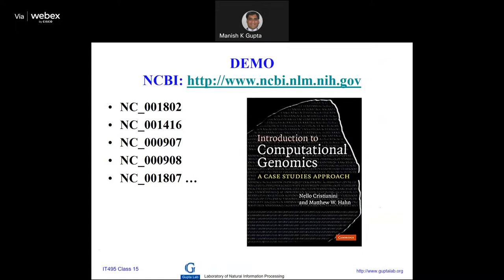There is a nice book if you want to understand computational genomics. I will show you a demo at the NCBI website — the NIH National Institute of Health. These numbers are accession numbers, just like each book has an accession number. Whenever you sequence any genome, you assign an accession number and it goes into the database. You can search using the accession number.